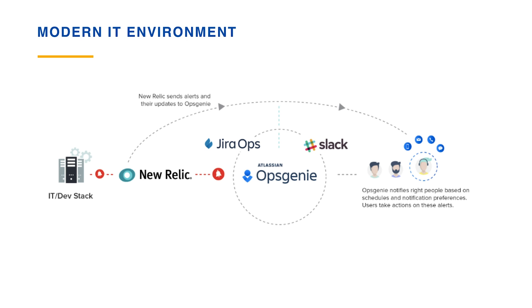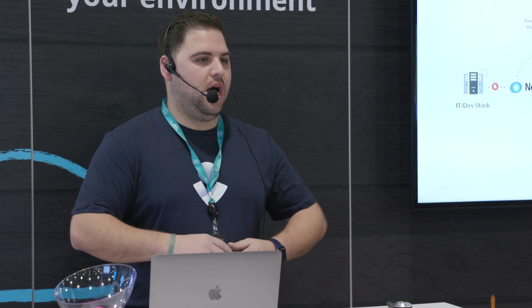Here is a display of a modern IT environment where New Relic handles application monitoring and sends notifications to Opsgenie. Opsgenie does correlation to figure out if alerts are related to one incident, then notifies the correct on-call users. We can also use Slack to notify on-call individuals, as well as Atlassian's new product Jira Ops — an incident management platform for sending notifications, linking Slack war rooms, and handling incidents on the fly, with a post-mortem report after the incident is over.